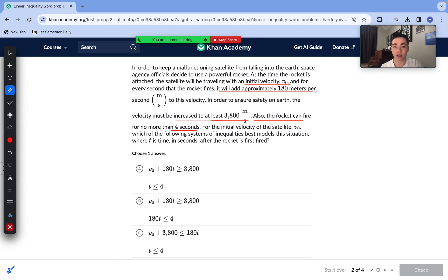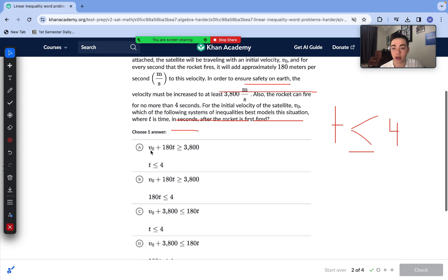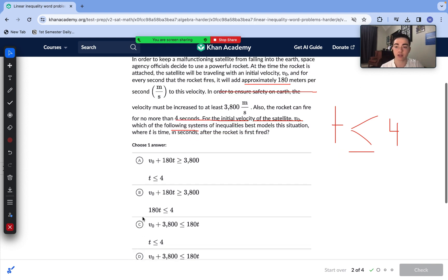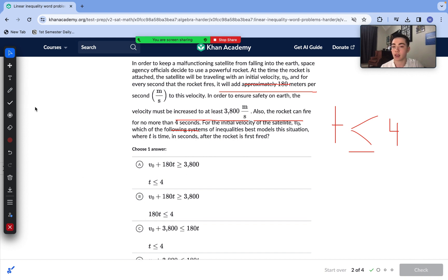First off, this one sentence determines one of our inequalities. The rocket can fire for no more than four seconds. That means the time is going to be less than or equal to four. We cannot be firing for over four seconds. So that is included in answer choice A and answer choice C. So we can get rid of answer choice B and D immediately.